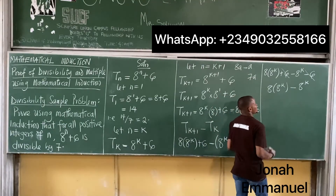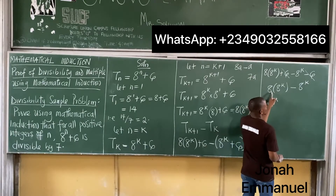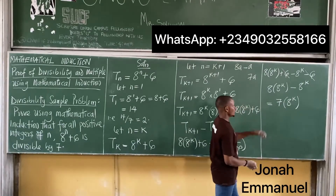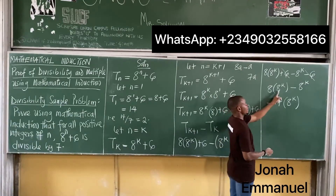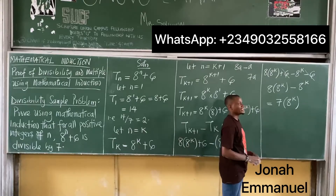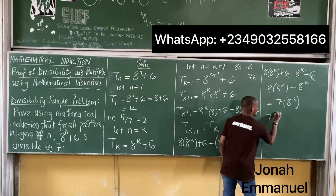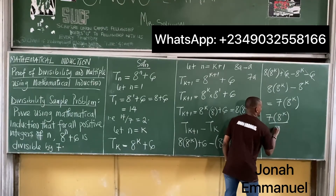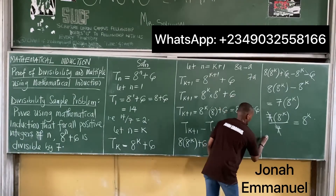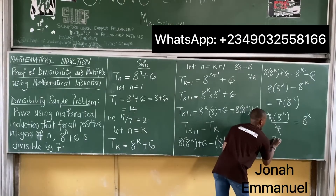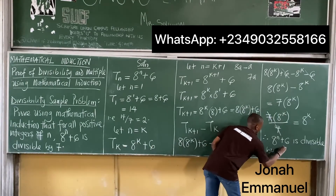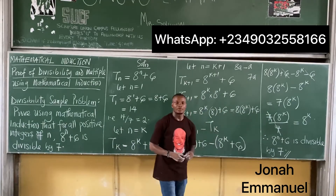So 8 × 8^k - 8^k = 7 × 8^k. Is this divisible by 7? Yes, because 7 × 8^k divided by 7 cancels the 7, leaving 8^k — a whole number. Therefore, 8^n + 6 is divisible by 7 for all positive integers n. This is how you solve this problem.